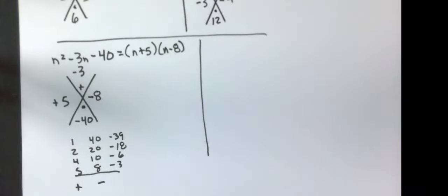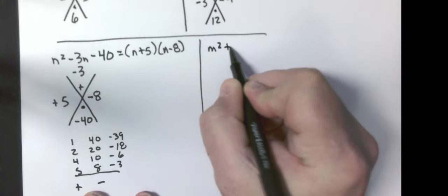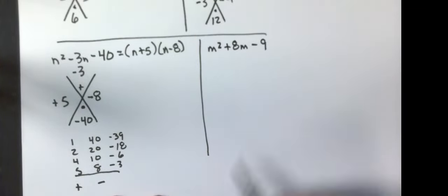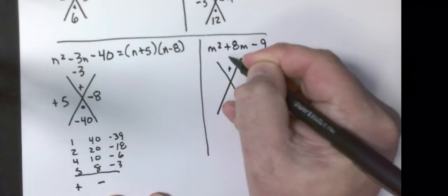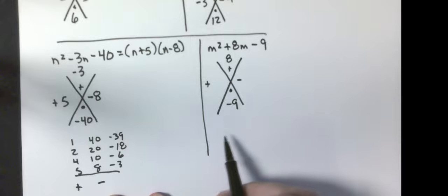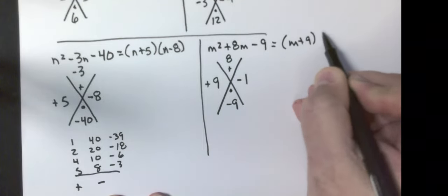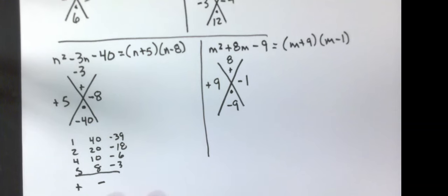Last example before the IXL homework: m squared plus 8m minus 9. I need two numbers that add to 8 and multiply to negative 9 — I'm going to have a positive and a negative. To get 8, I'll use 9 minus 1, so my answer is (m plus 9)(m minus 1). Your factors are two numbers that multiply to the last number and add to the middle number.